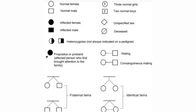Two shapes arising from a single line represent twins. There are fraternal twins and identical twins — identical twins share the same genetic material. If a line joins both twins, they are identical; if not, they are fraternal. A circle with the number three inside represents three normal girls; a square with two represents two normal boys. If sex is unspecified, an oblique square is used. A deceased individual is shown by an oblique line over the symbol. A double line between a couple indicates consanguineous marriage; a single line indicates non-consanguineous.